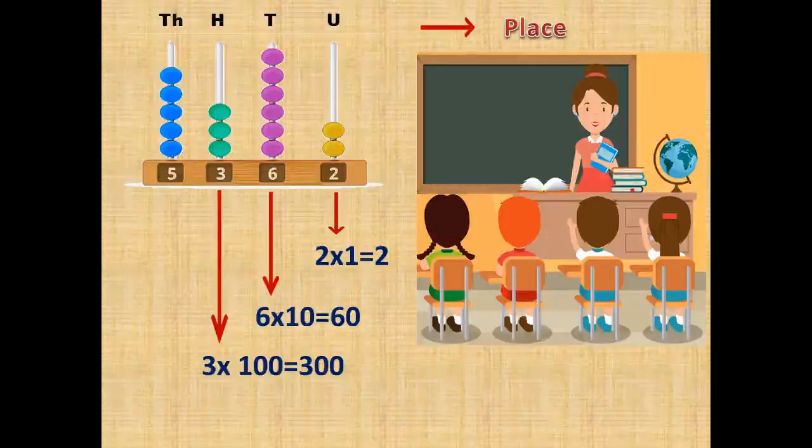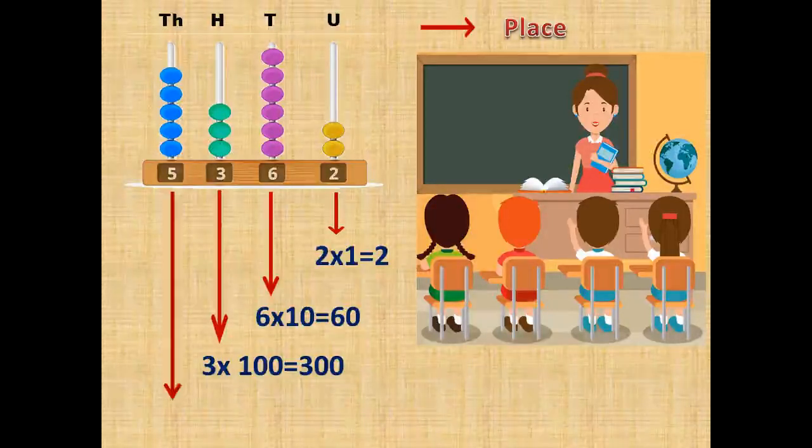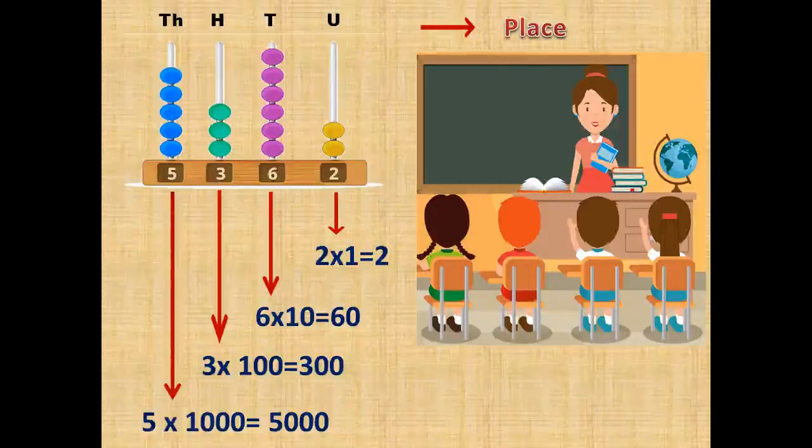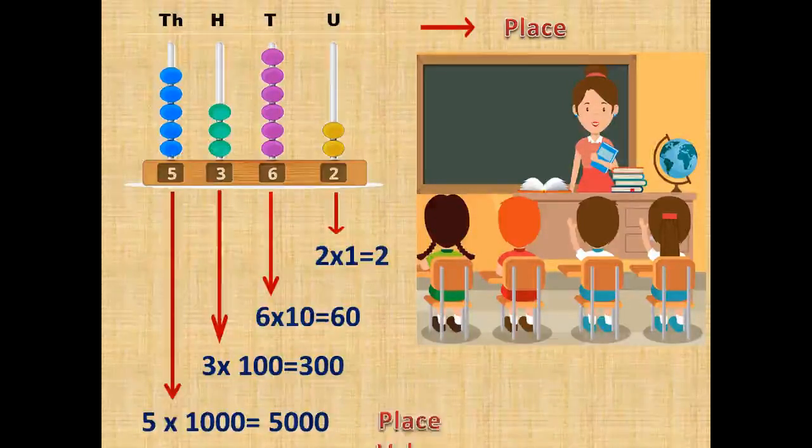3 multiplied by 100 gives you 300. And 5 multiplied by 1000 gives you 5000. So we get the place value of each number here.